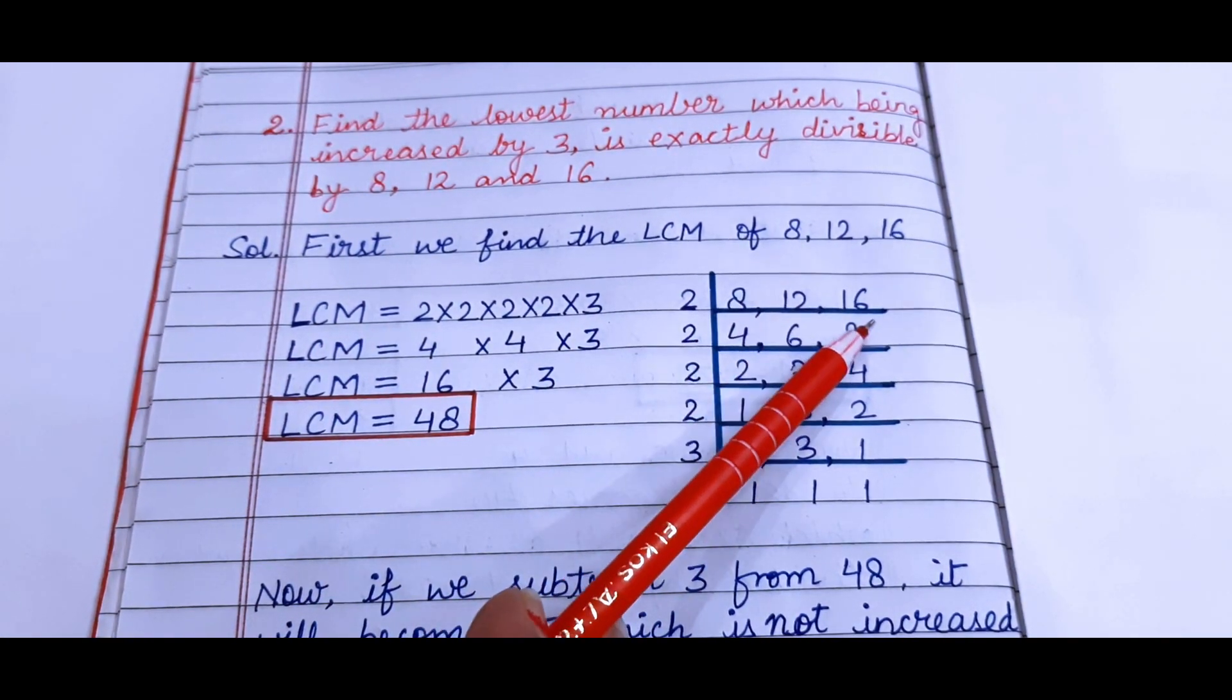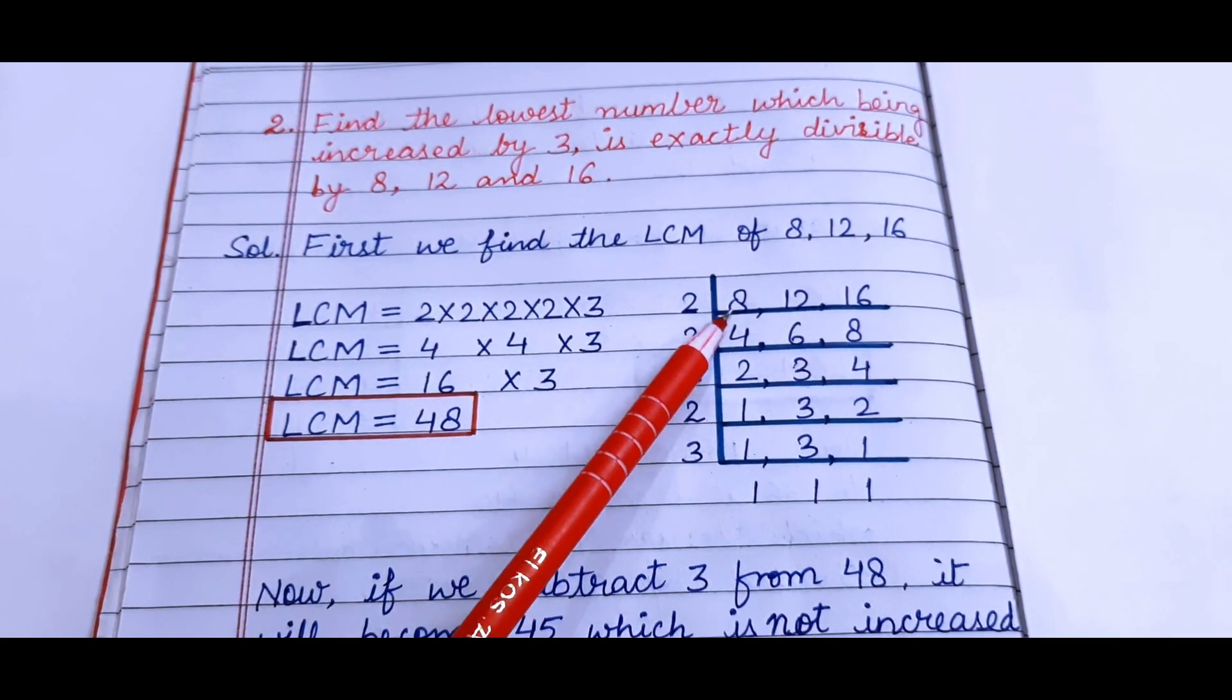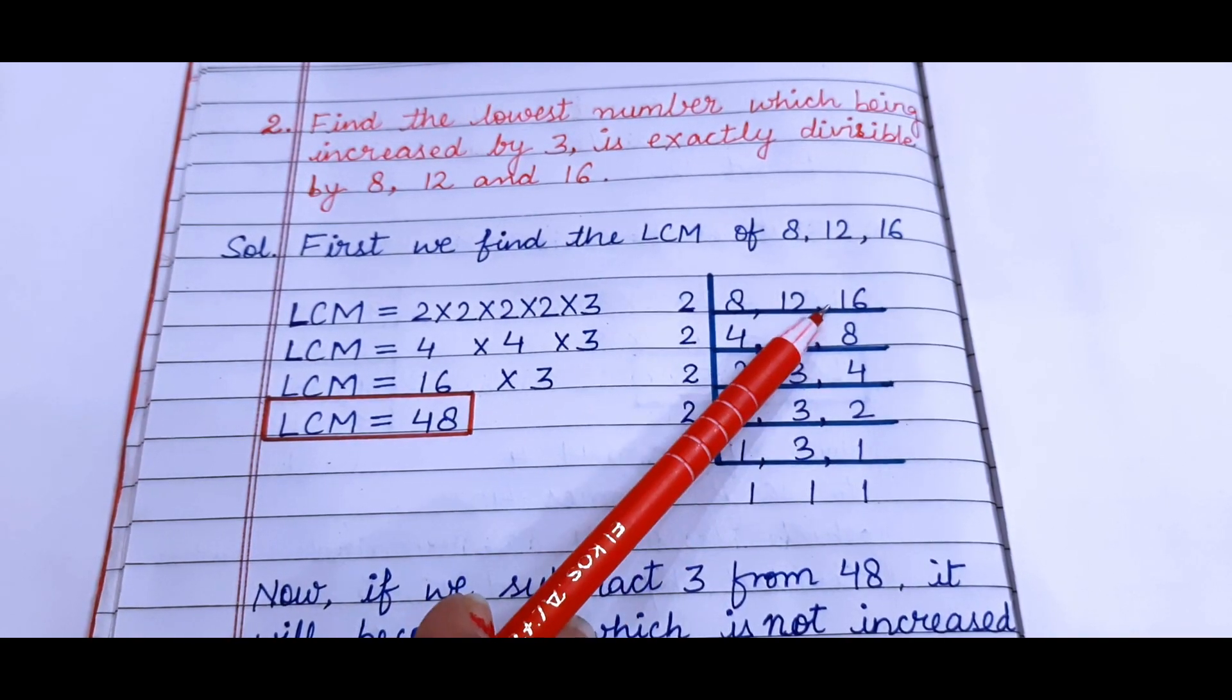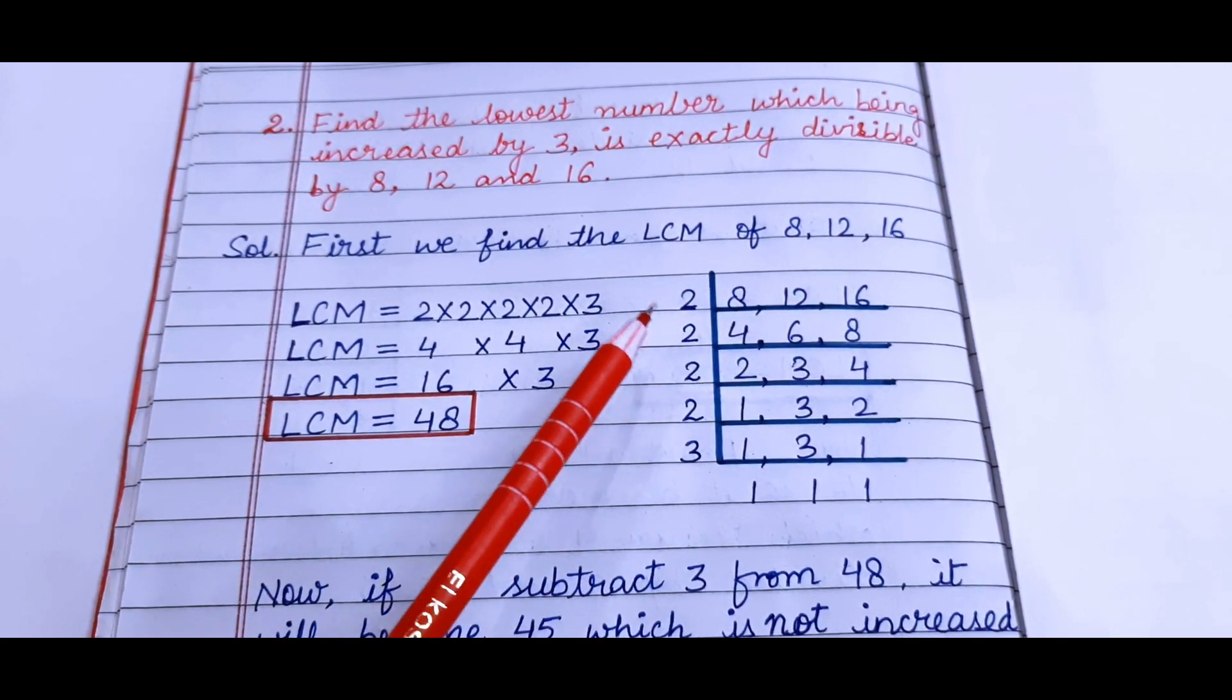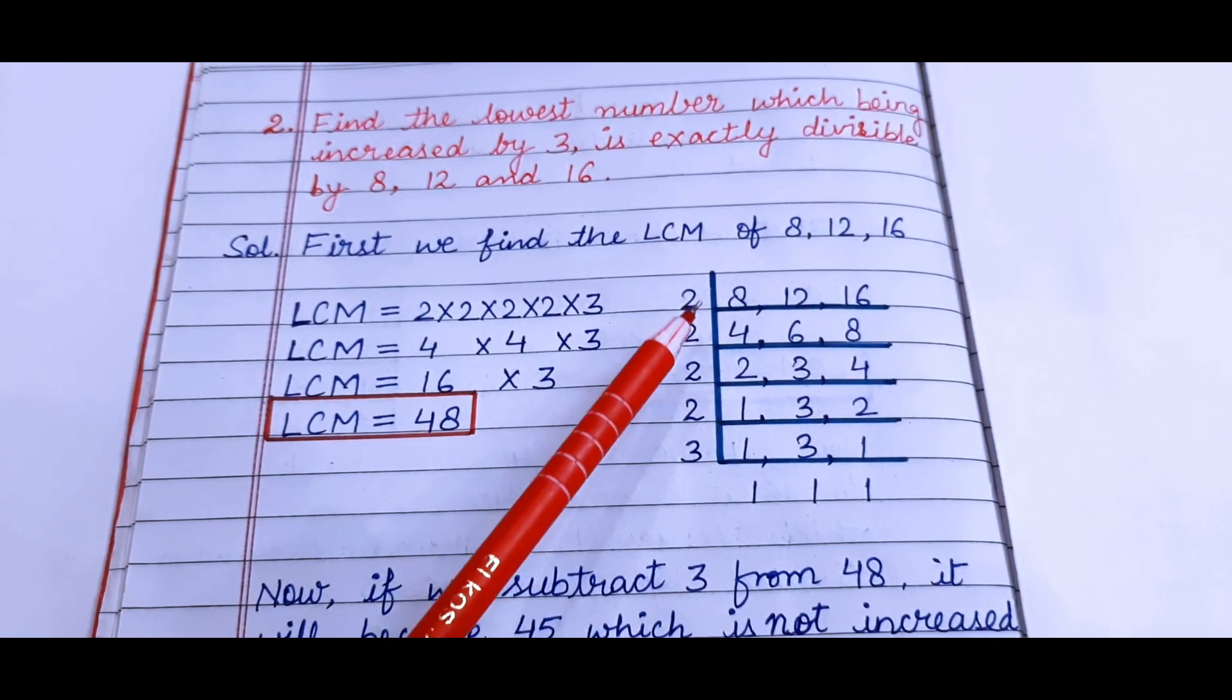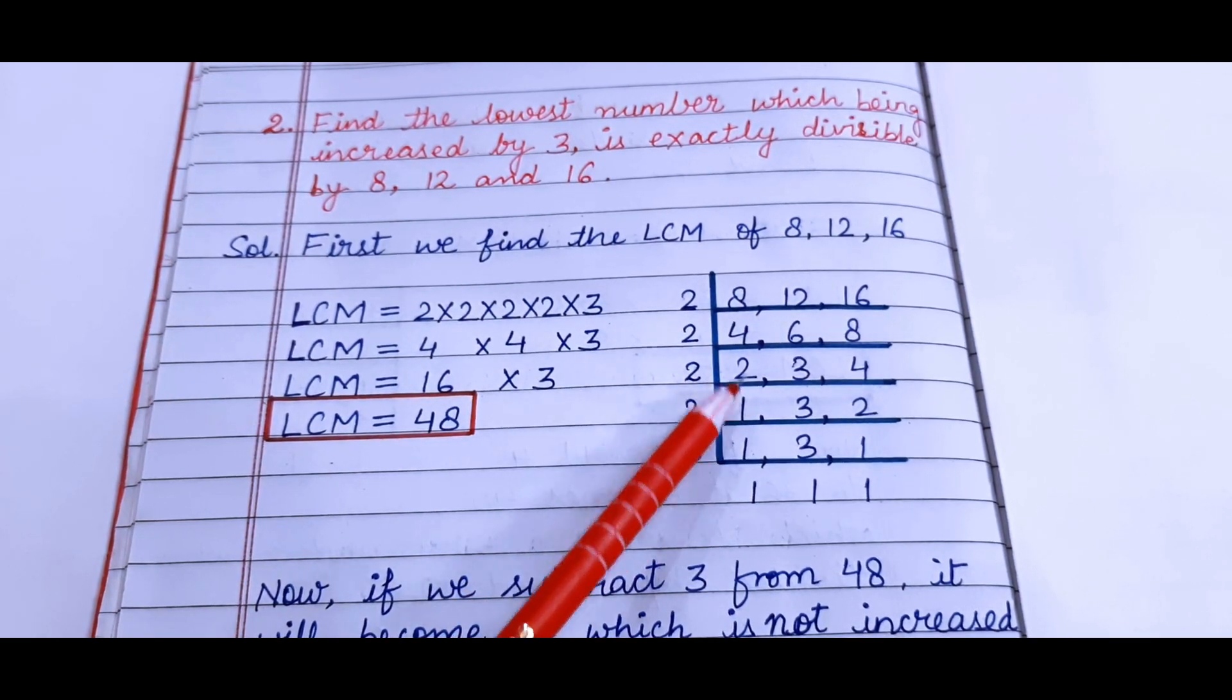So now let's find it out. 8, 12 and 16 I have written like this. Again I have used the division method only. 2 fours are 8, 2 sixes are 12, 2 eights are 16. Next is 2 twos are 4, 2 threes are 6, 2 fours are 8.